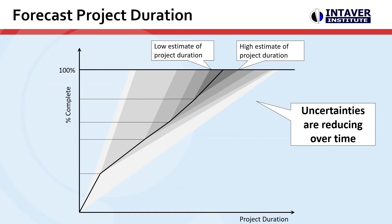Here we can see a visualization of the changing cone of uncertainty as we get further down toward project completion. We get an updated estimate of cost at completion and an estimate of schedule at completion. The cone of uncertainty and the range of uncertainty are reduced as we move through the project and gather more actuals and performance data in the system.